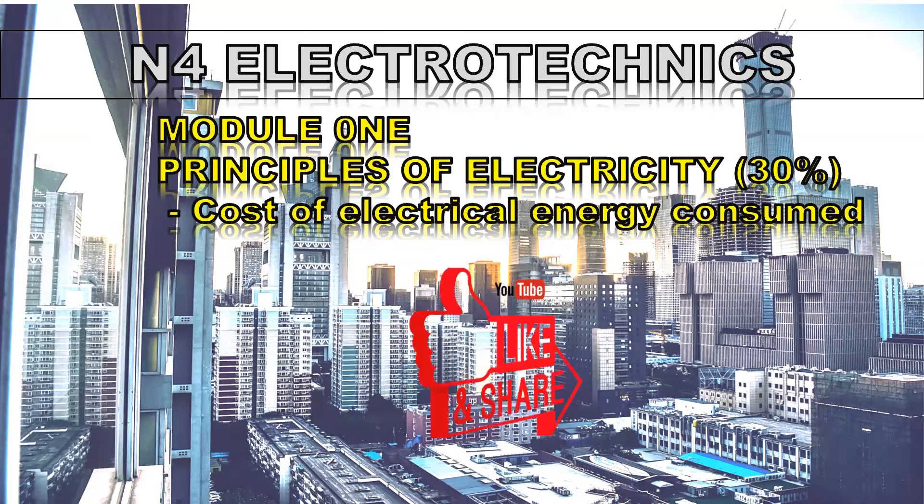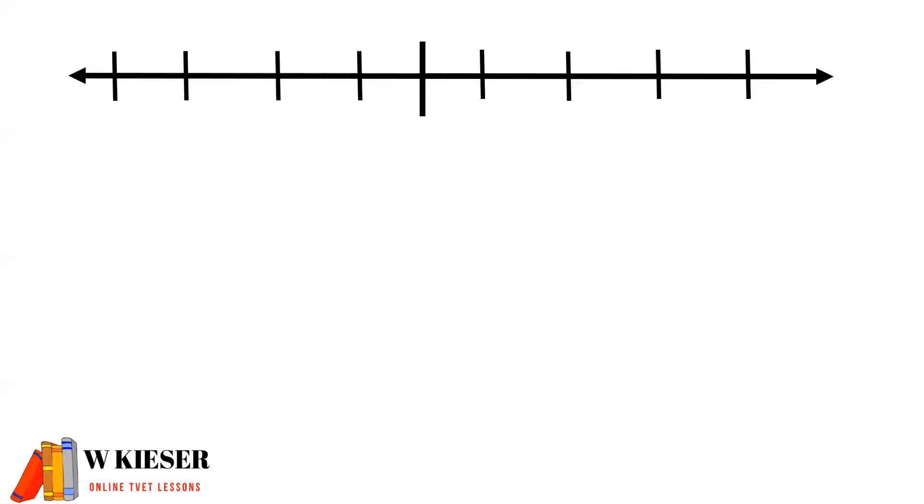Now before we do that, just a fundamental principle. Here we have a number line, everything to the left of the number line is positive and everything to the right of the number line is negative.